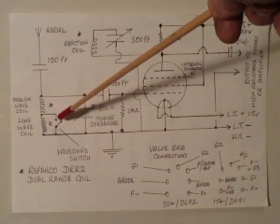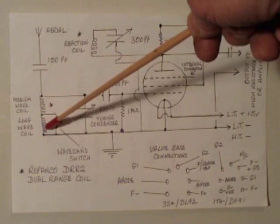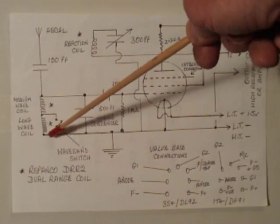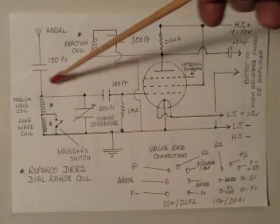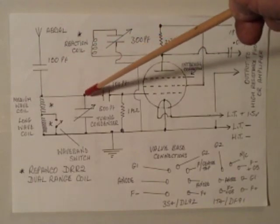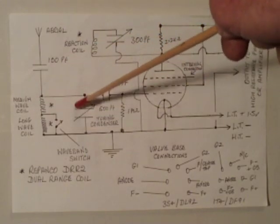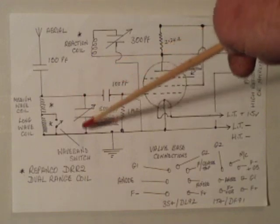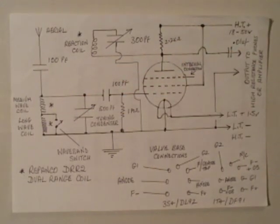The medium wave and long wave switching is here. There's an extra winding there for the long wave and that's shorted out on medium wave. It goes to the tuning capacitor which is connected between the top end of the coil and earth. Around about 500 puff, any old radio tuning capacitor will do. Nothing special.